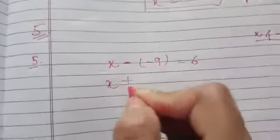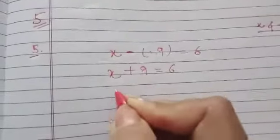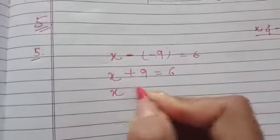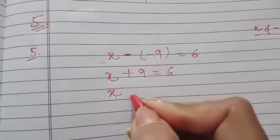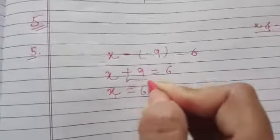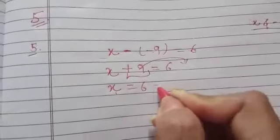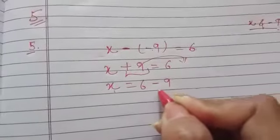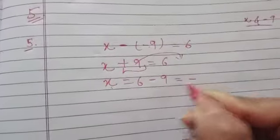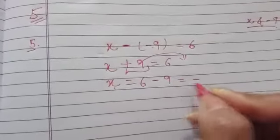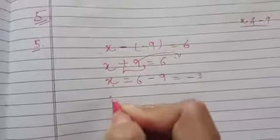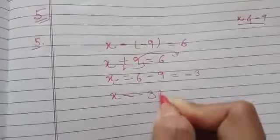Minus minus becomes plus. So now to solve for the value of x, take this +9 to the other side, it becomes -9. -9 is the bigger number, so answer will be minus. 9 minus 6 will be 3. So one possible case can be this.